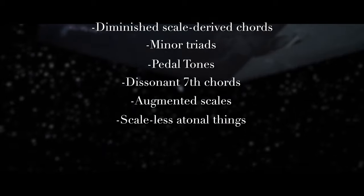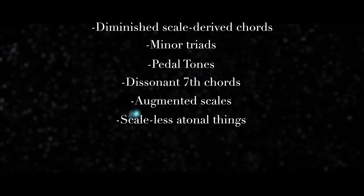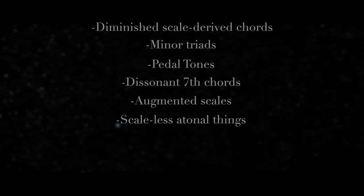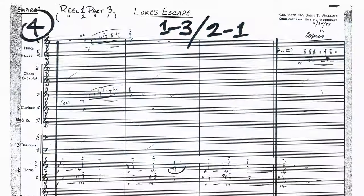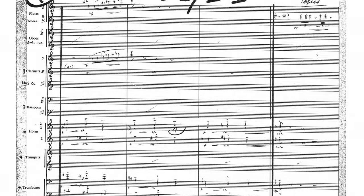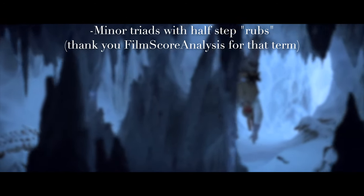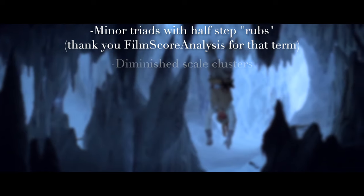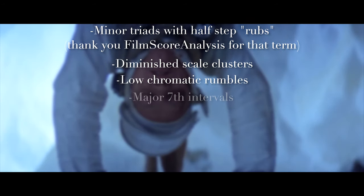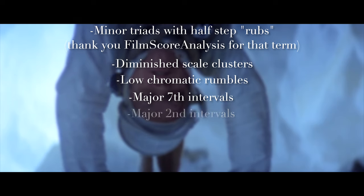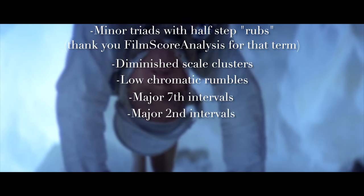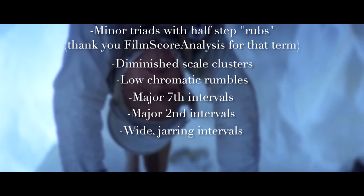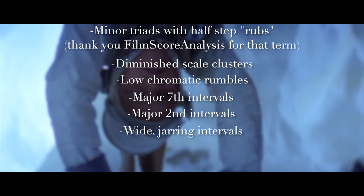Now these are all things that could simply be revealed in an analysis, so I moved on to another atonal-ish cue: 'Luke's Escape.' Here I found some minor triads with dissonant half-step rubs, diminished scale clusters, low chromatic rumbles, more major 7th intervals, major 2nd intervals, and wide jarring intervals in several wandering woodwind lines.